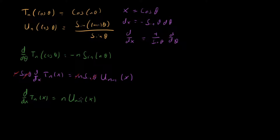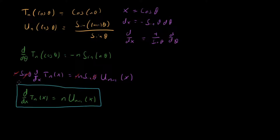What we end up with is that d/dx of T_n(x) = n·U_{n−1}(x). So taking a derivative of the Chebyshev polynomial of the first kind gives us a Chebyshev polynomial of the second kind. That's a cool property — it's a nice way of relating the two kinds of Chebyshev polynomials, which have similar but slightly different definitions.